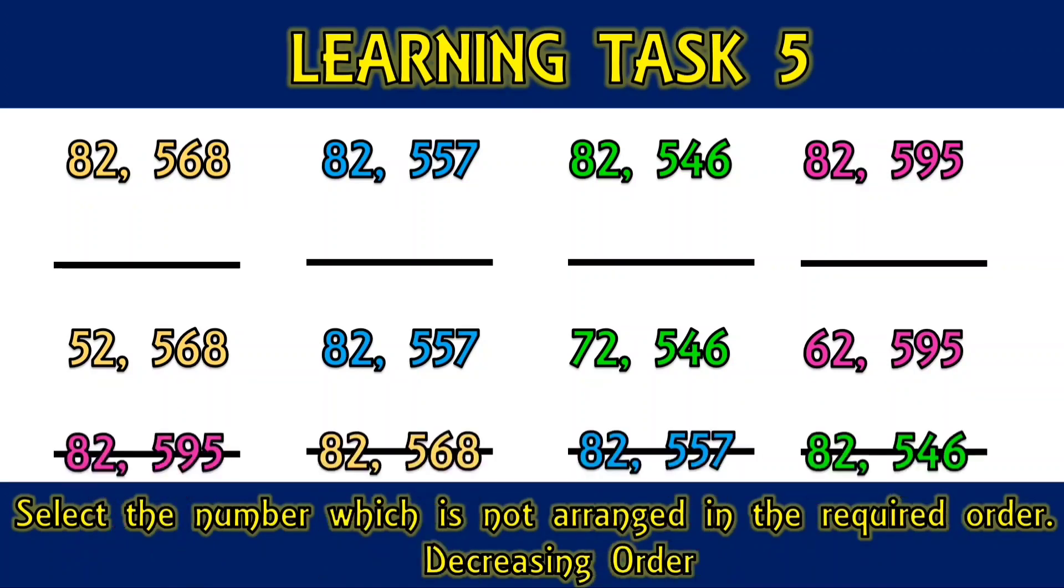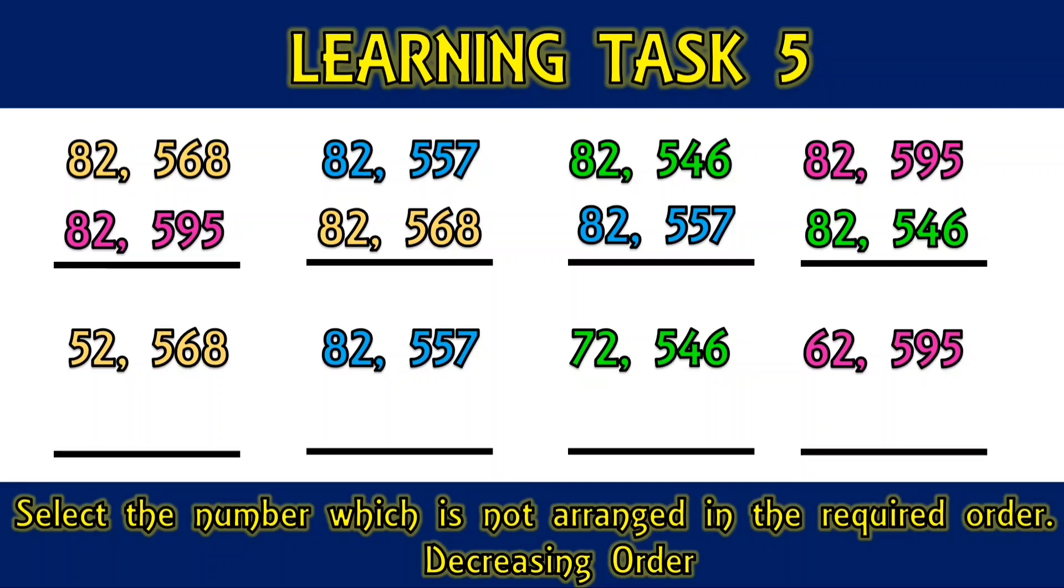Arrange the set of numbers in decreasing order: 52,568, 82,557, 72,546, and 62,595.